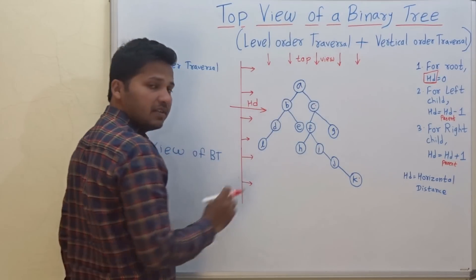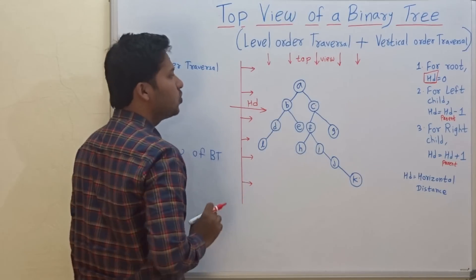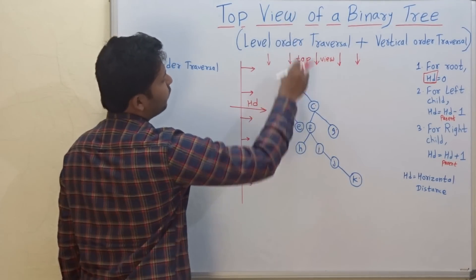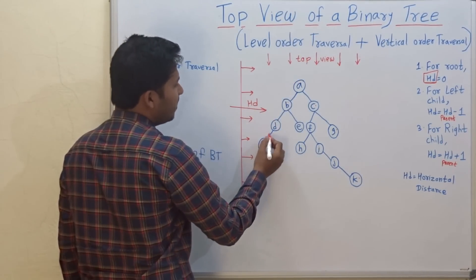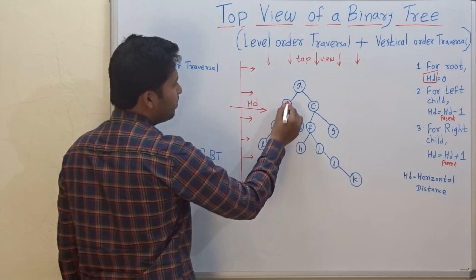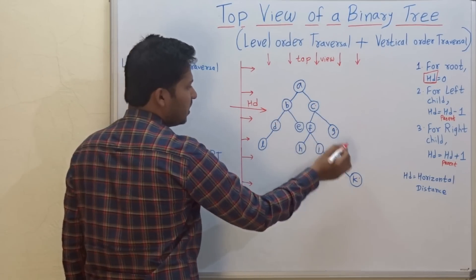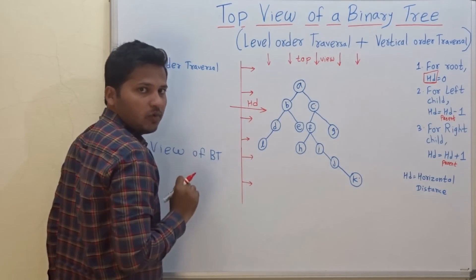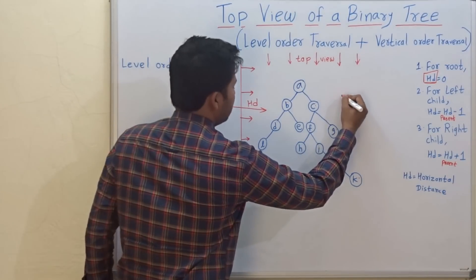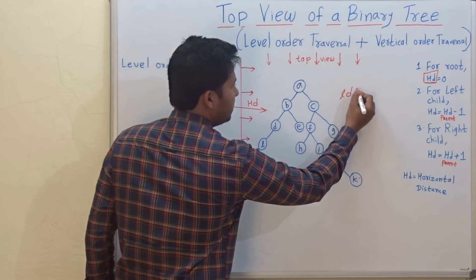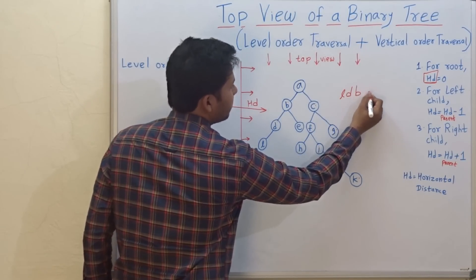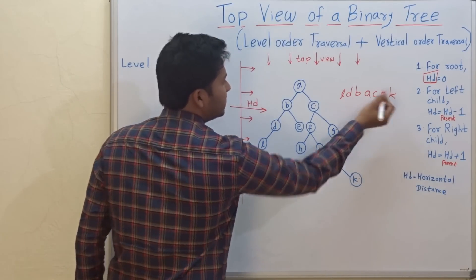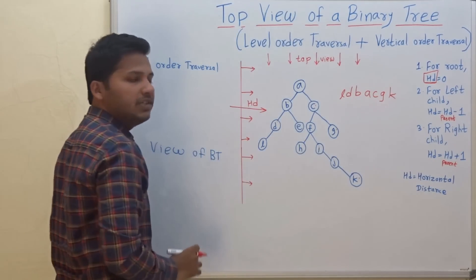This is the binary tree and we want to print the top view of it. If we look at this tree from the top, the nodes L, D, B, A, C, G, and K will be visible. So the top view of this binary tree is L, D, B, A, C, G, and K.